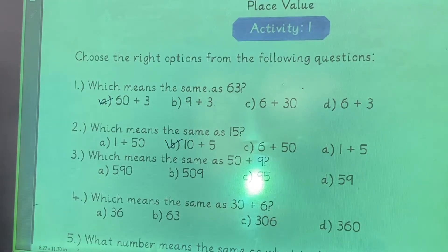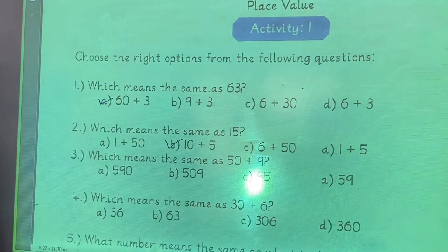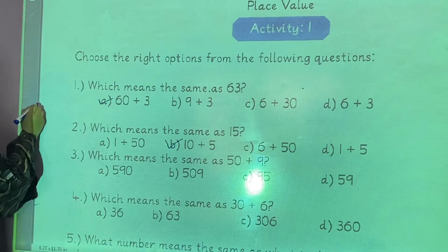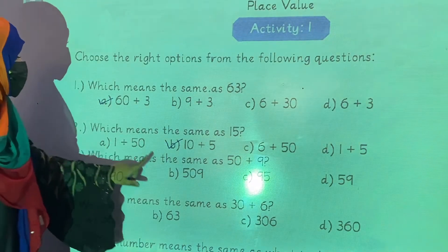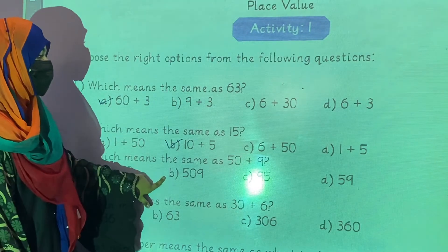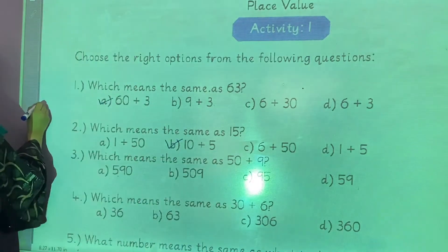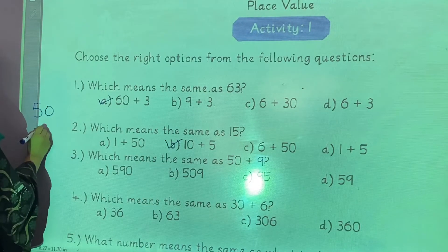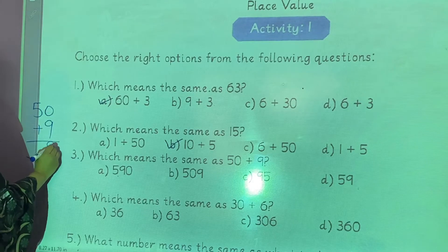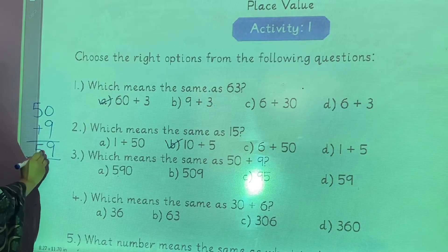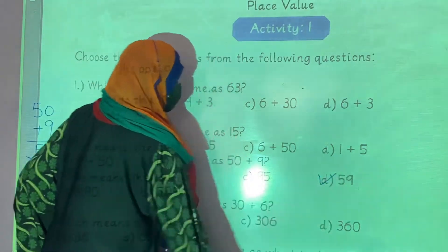Question number 3: which means the same as 50 plus 9? Option A is 590 — no, that is incorrect. Option B shows 5, 0, 9 — also incorrect. Option C — now 50 plus 9, the units digit is 9 and the tens digit is 5. So the answer is option D: 59.